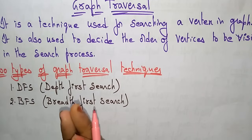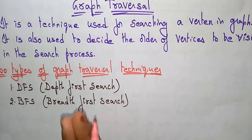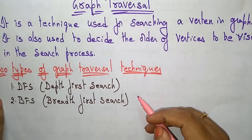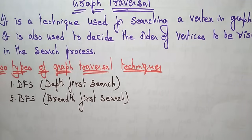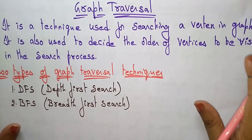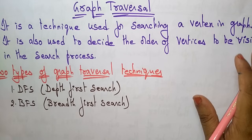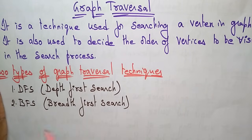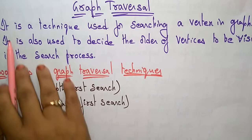We have seen graph traversal before. The types of graph traversal are the same as for tree traversal — we have depth first search and breadth first search for searching anything. In the same way, here in the graph we will see these two different techniques: DFS and BFS.